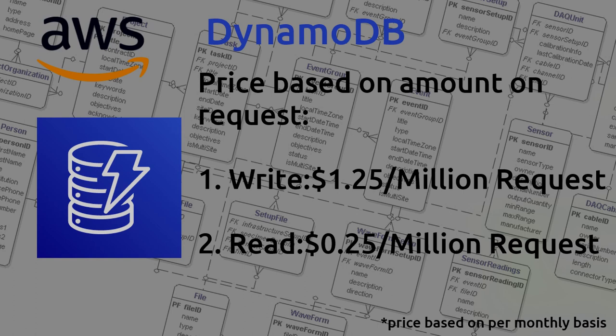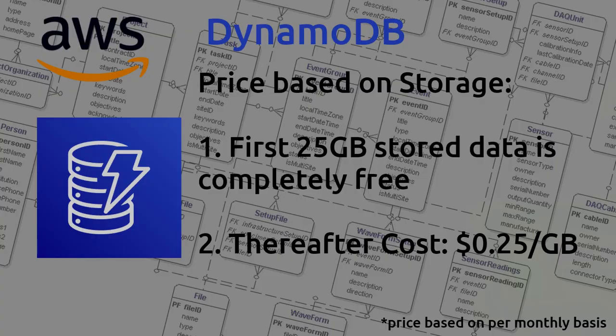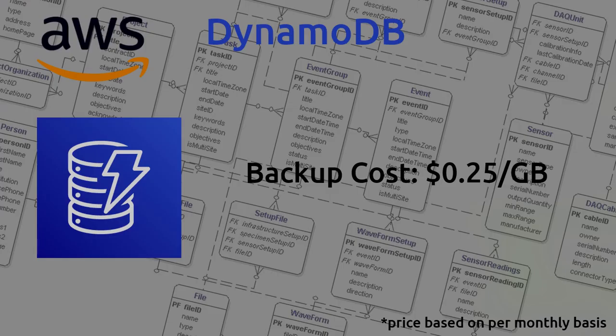The DynamoDB pricing structure is a bit different — it's based on the number of requests made to the server. The write cost is around $1.25 per million writes, the read cost is around $0.25 per million requests every month, and the storage cost is around $0.25 per GB every month. The first 25 GB is absolutely free, which is a plus. If you're just getting started and testing your product, this is the best solution. Backup cost is around $0.25 per GB every month.